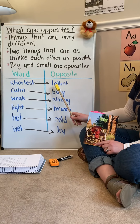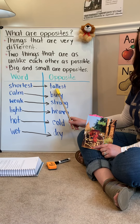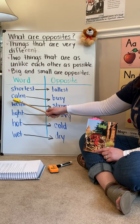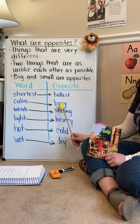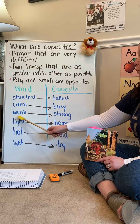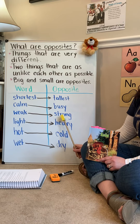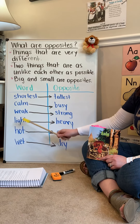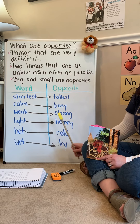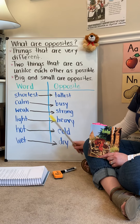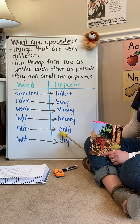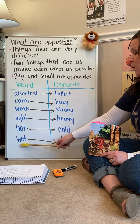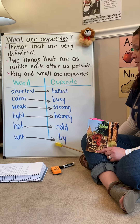Shortest — tallest. Calm — busy. Weak — strong. Light — heavy. Hot — cold. Wet — dry.